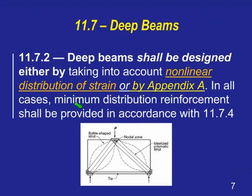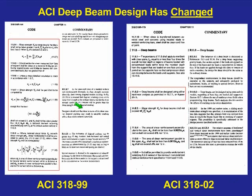The code has a simple line stating that deep beams shall be designed either by accounting for nonlinear distribution of strain or by Appendix A. Most engineers do not have nonlinear finite element software on their desktop, so even though two options are given, the practical option for deep beams with a span-to-depth ratio of four is to go to Appendix A. The old cookbook method that was in the 1999 code and prior editions was entirely voted out between the 1999 and 2002 codes, replaced by the two-option section just described.